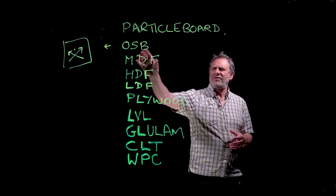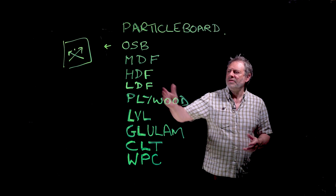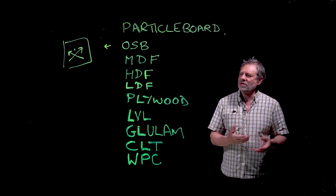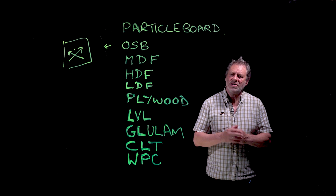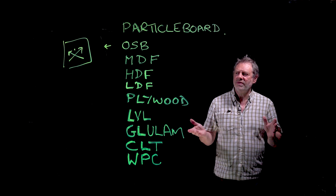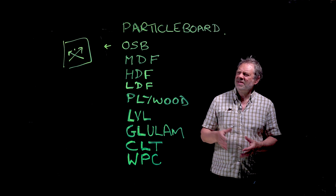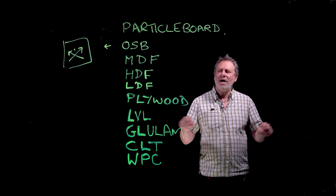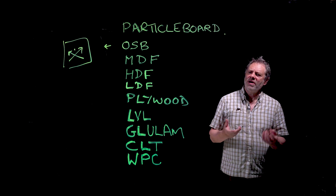MDF really is an interior product, particle board is an interior product, but OSB can be used for exterior applications. HDF - high density fiber, which we used to call hardboard - doesn't use an adhesive. Hardboard is made using a masonite gun where you heat up the chips to a high temperature and explode them into a chamber. The lignin, above its glass transition temperature, flows over the fibers and then you press the fibers together and the lignin glues them together. It's not that moisture resistant. It had a very smooth surface on one side and a wire side on the other.